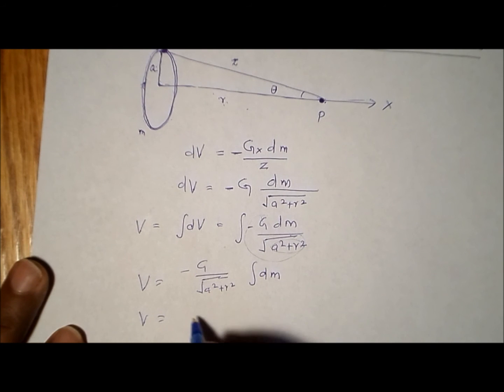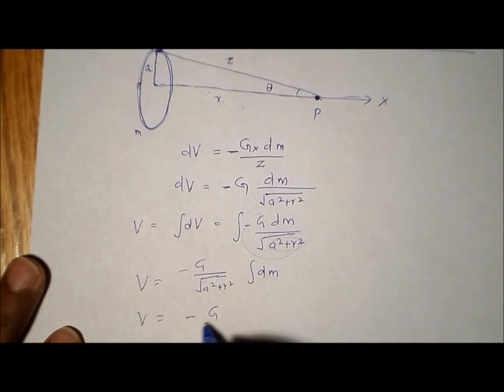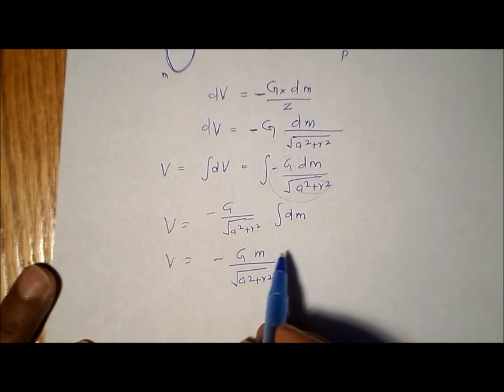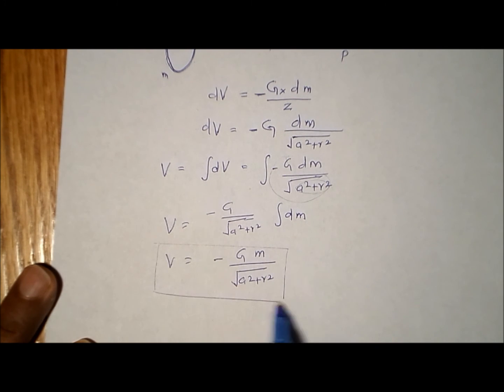The integral of dm is nothing but the total mass of the ring, so we get V equal to minus G divided by square root of a squared plus r squared times m. And this is the equation of the gravitational potential due to the ring.